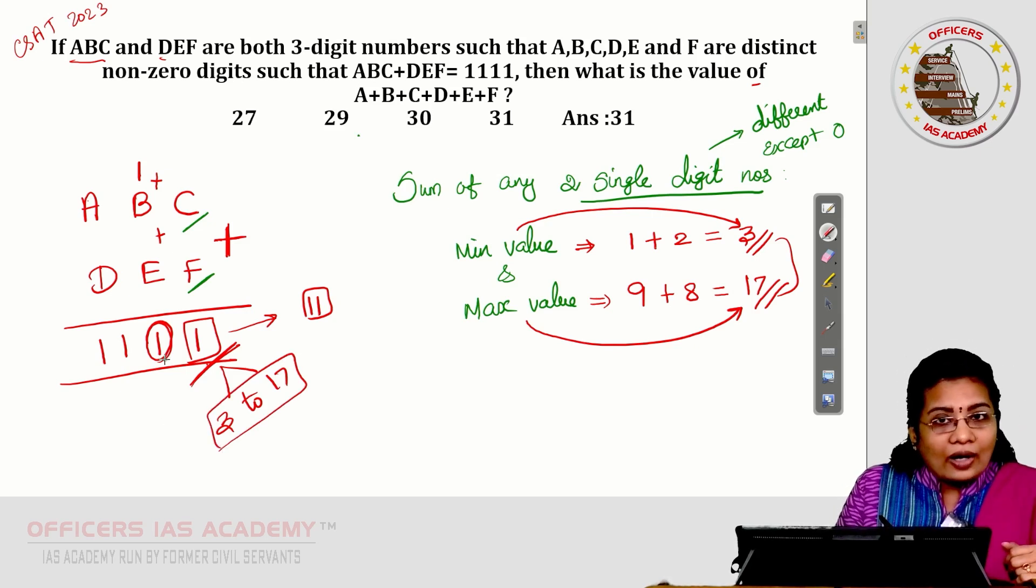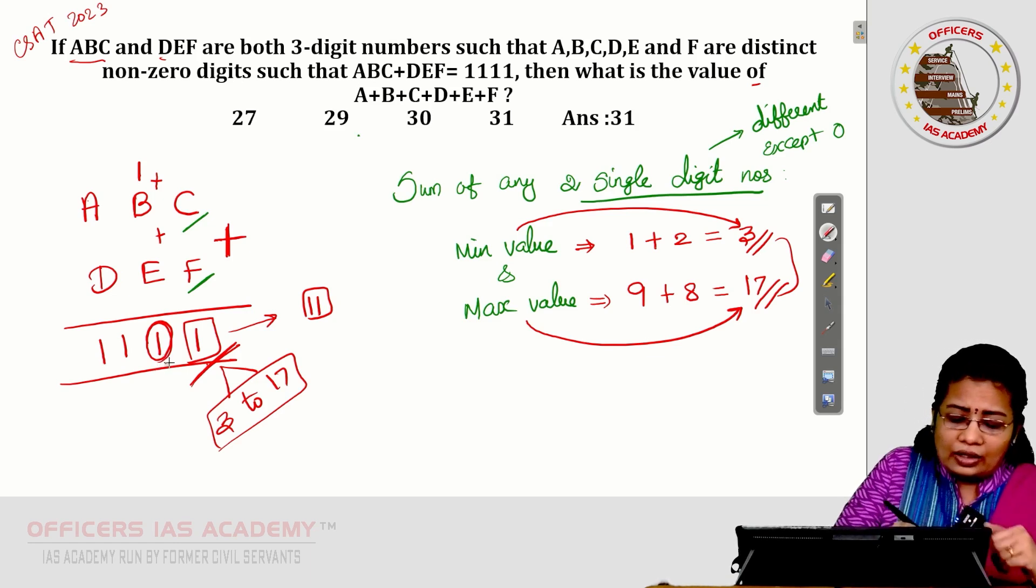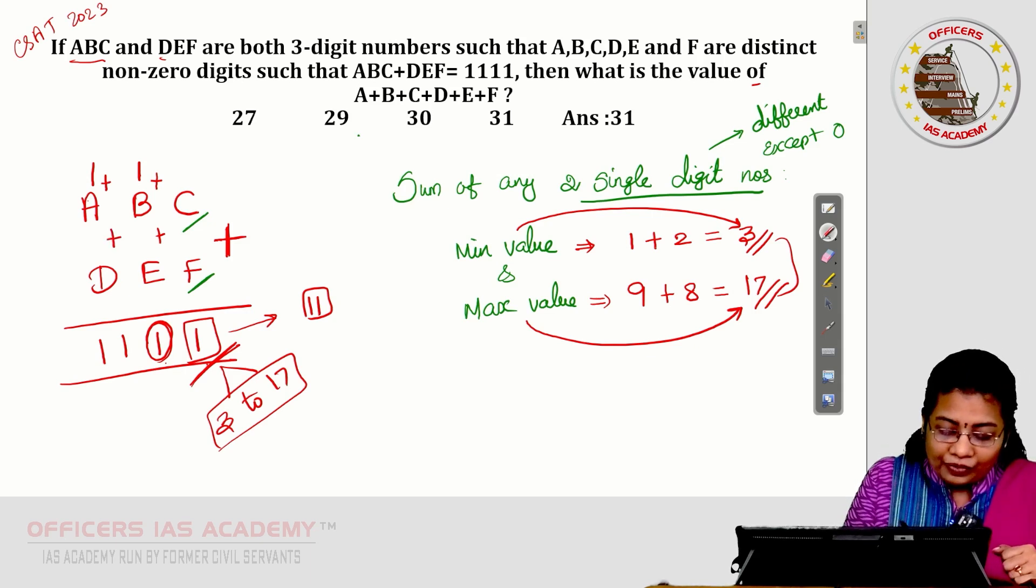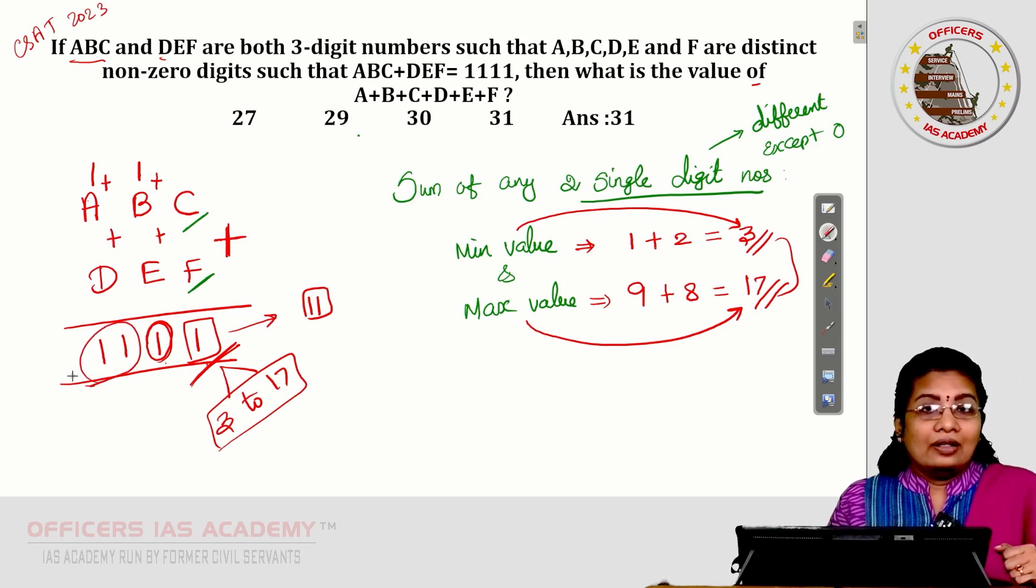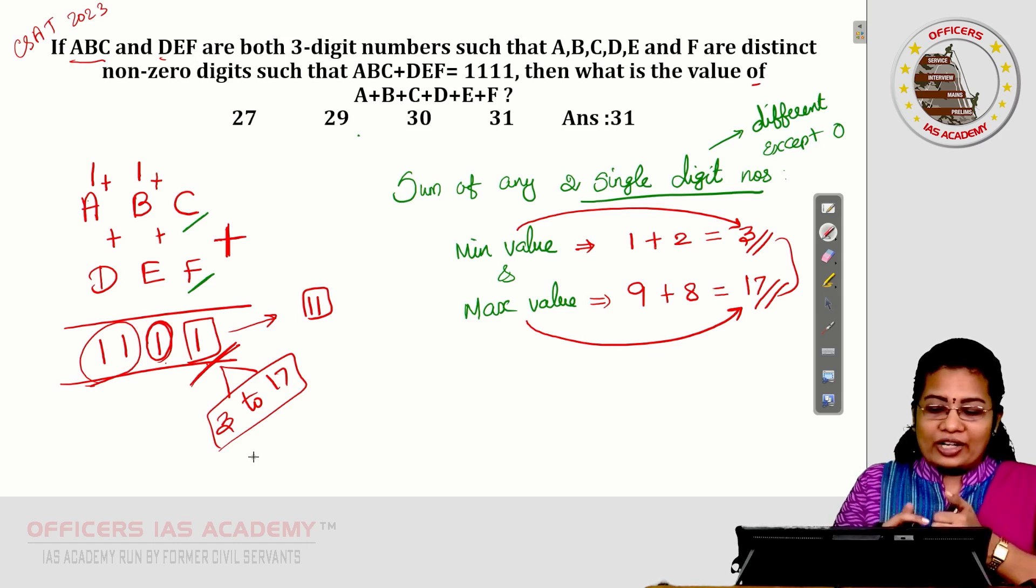11 means 1 is here. Where is the another 1? It is on the top of B. So, 1 plus B plus E. Another 1 is given. It is also not 1. It is 11. This 1 plus A plus D, 11. This is the idea you need to take from these points.